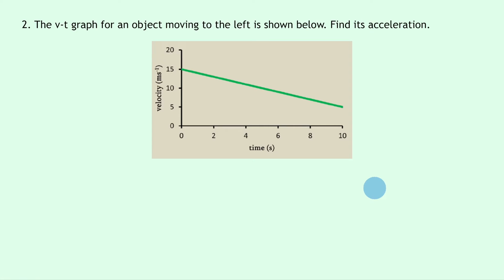I'm going to write down that I'm trying to find the acceleration a. I know the initial velocity u of the object is 15 meters per second, and the final velocity v at this point here corresponds to roughly 5 meters per second, and that's all happening in a total time of 10 seconds.